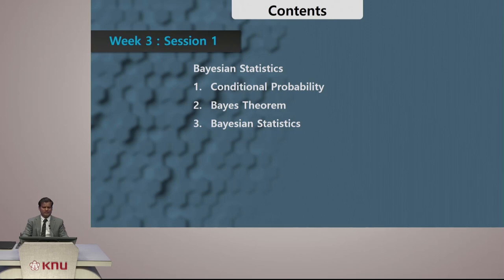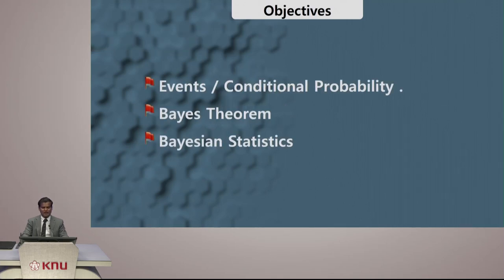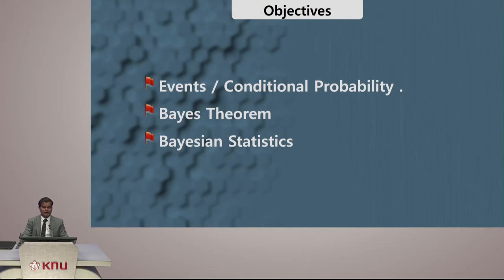Before we go into Bayesian statistics, we will consider conditional probability and the Bayes theorem, which is the very basis for Bayesian statistics. Today's content covers events, conditional probability, Bayes theorem, and Bayesian statistics — topics that will help you in the long run, even in machine learning and artificial intelligence, including Bayesian networks. This is one of the important topics in data science that gives you a platform to build upon for any machine learning method.